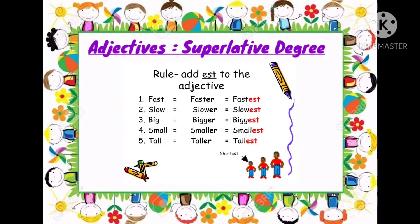Now let's look at the rules for superlative degree. First rule: we add EST to the adjective to change it into superlative form. For example: fast becomes faster in comparative and fastest in superlative degree. So fast, faster, fastest — these are the three forms: positive, comparative, and superlative. Similarly: slow becomes slower and slowest; big becomes bigger and biggest; small becomes smaller and smallest; tall becomes taller and tallest.